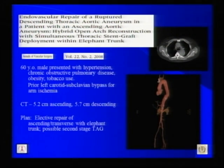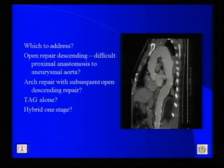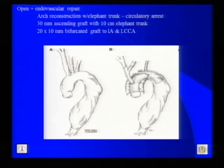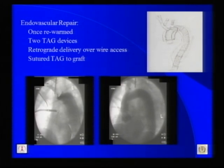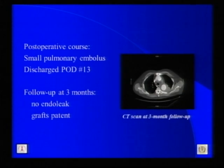We published our case back in 2008 of a 5.2 cm ascending and 5.7 cm descending elective aneurysm. While the patient was being worked up, he expanded acutely and presented with contained rupture. His proximal arch measured 34 to 40 mm in a reverse funnel, with less than 1.5 cm in length. Given the contained rupture, we performed an open and endovascular approach in a single setting: arch reconstruction with an elephant trunk under circulatory arrest. Once rewarmed, two TEVAR devices were placed via retrograde delivery and sutured to the stent graft. The postoperative course was complicated by a small pulmonary embolism, and he was discharged home.